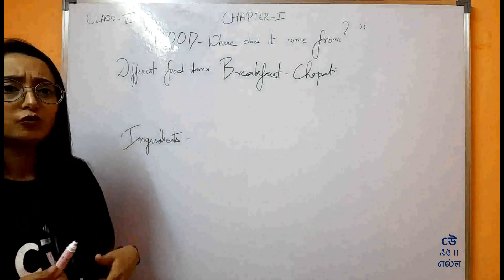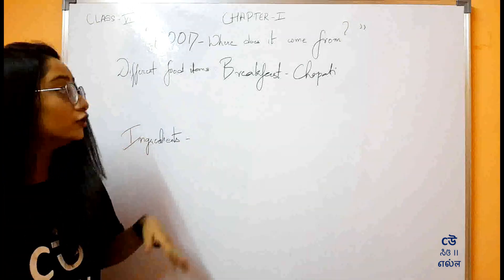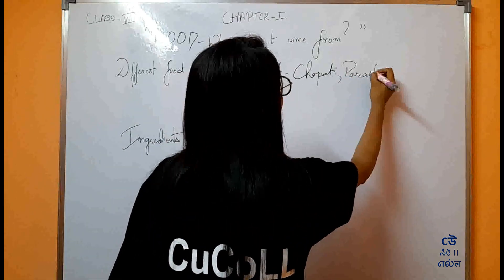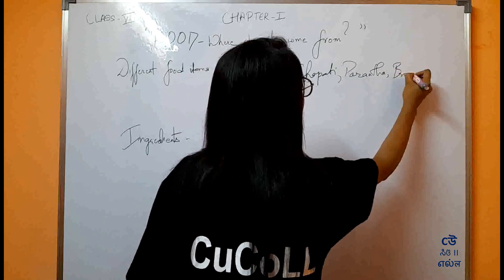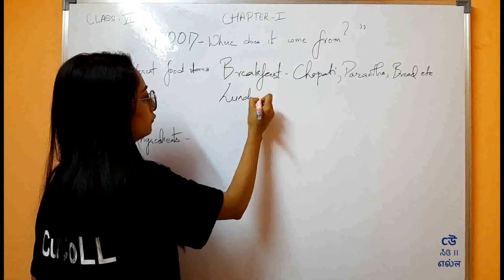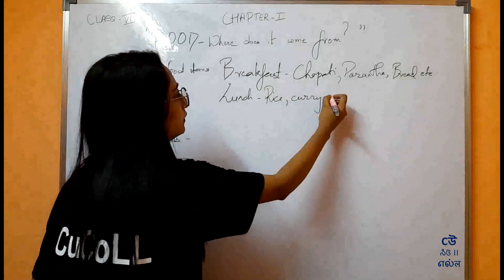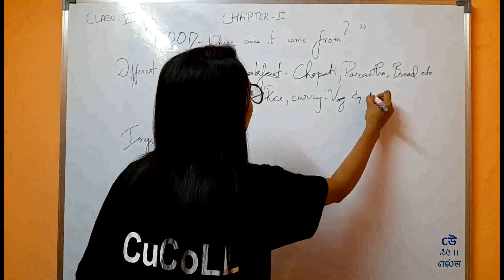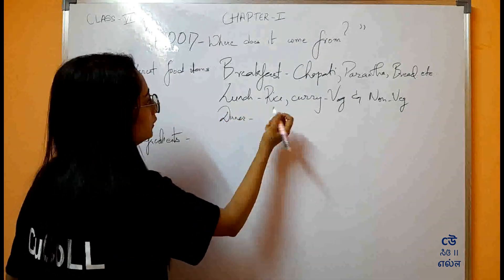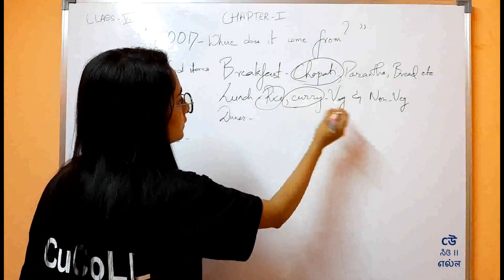Where does it come from? Before going to the topic, let us have a look at the different foods that we have in our daily life. For breakfast, we usually have chapati, bread. For lunch, likewise, we have rice, curry, and that can be veg and non-veg. And for dinner as well, we have sometimes rice, or it can be chapati and curry — the same thing.